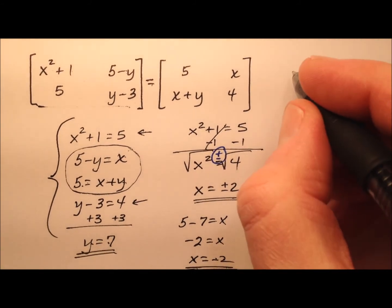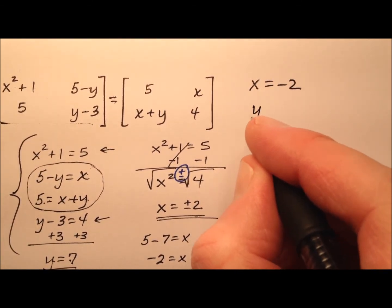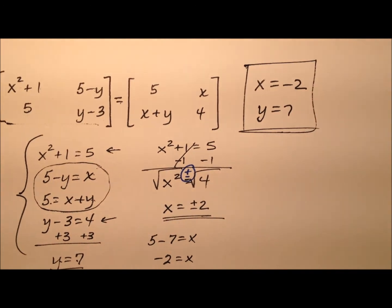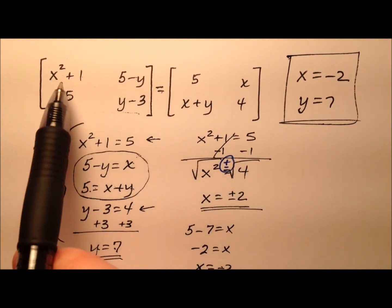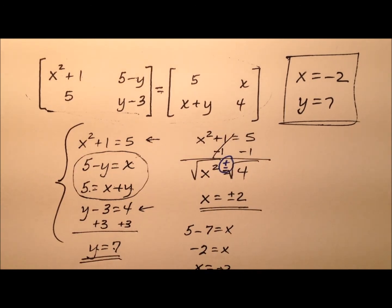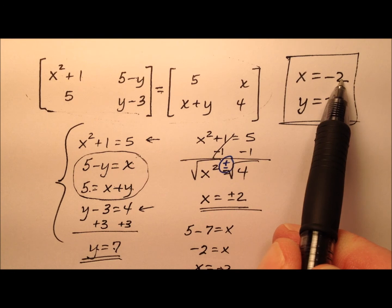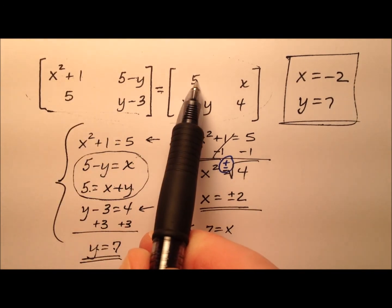Let's go ahead and write these two values up here. We know x was negative two and y was positive seven. Let's plug these back in to these two equivalent matrices and verify that they're right. x squared plus one: negative two squared is four plus one is five. So that works.